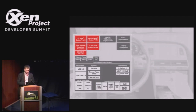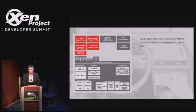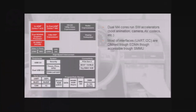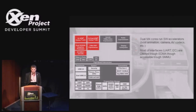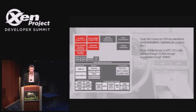That's the J6 CPU architecture — you have a lot of peripherals, which you can check on the TI website. We decided that M4 cores, not A15, will run software accelerators like boot animation, camera, AV codecs, etc. Most interfaces like UART and I2C have to be DMA'd through the SMMU. We decided we don't want to do para-virtualized drivers — we want to map the hardware to DOM U. To keep it safe, you need to have the system SMMU implemented. Unfortunately it's not there with Xen, but it will hopefully be there in 4.4, so we did our own hacks for that.